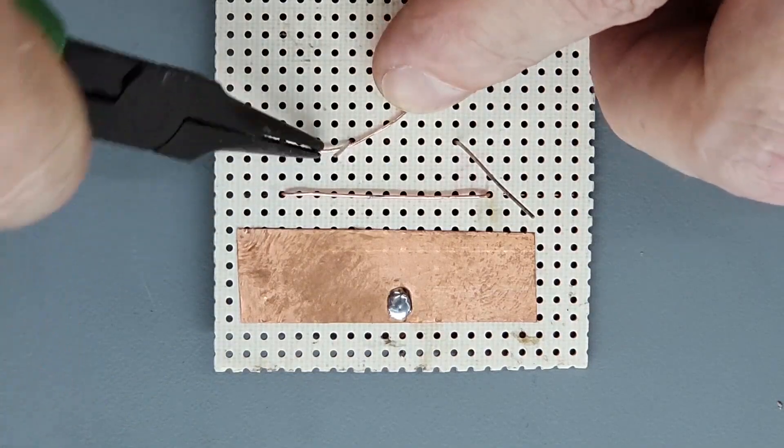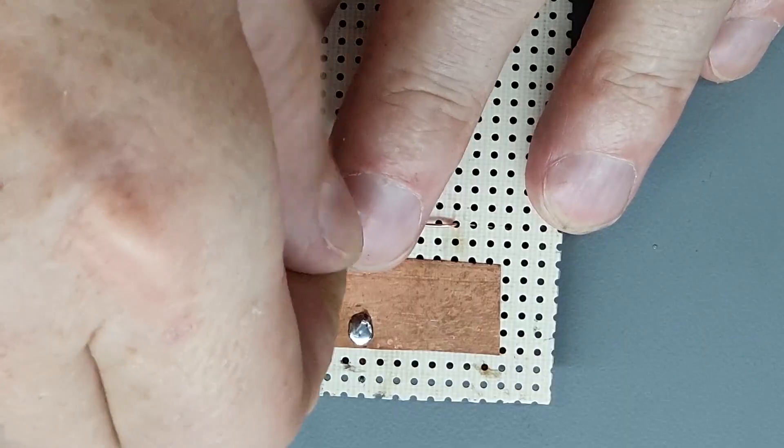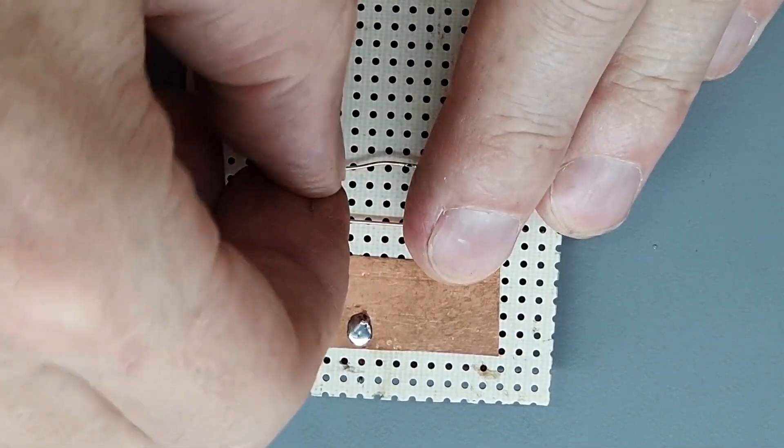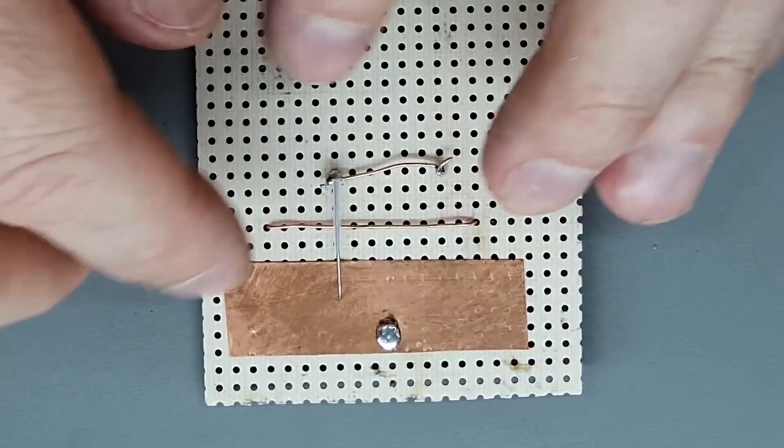Use clean bare 24 gauge copper wire to make your point to point connections. Slip Teflon tubing on wherever there is a danger of shorting. It's easy to slip tubing over component leads as well.